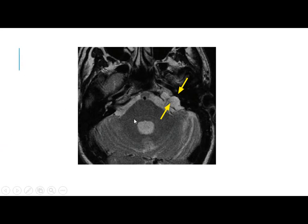On T2-weighted imaging, there is a well-defined mass in the left CP angle — a cystic lesion with signal intensity of CSF.